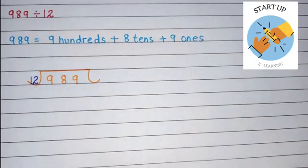We are going to put 989 into division brackets and 12 will be written outside. We will use the multiplication table of 12 to solve this sum. First of all, take the first digit of the dividend, that is 9.